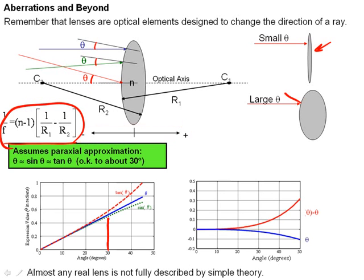Here's the 30-degree point. The blue line is theta, the green line is sine of theta, the red line is tangent of theta, and they really start to diverge pretty significantly at this point. If you look at the difference between theta minus tangent theta shown in the red line here, and the difference between sine theta minus theta shown by the blue line, not much deviation until you get out to about 30 degrees.